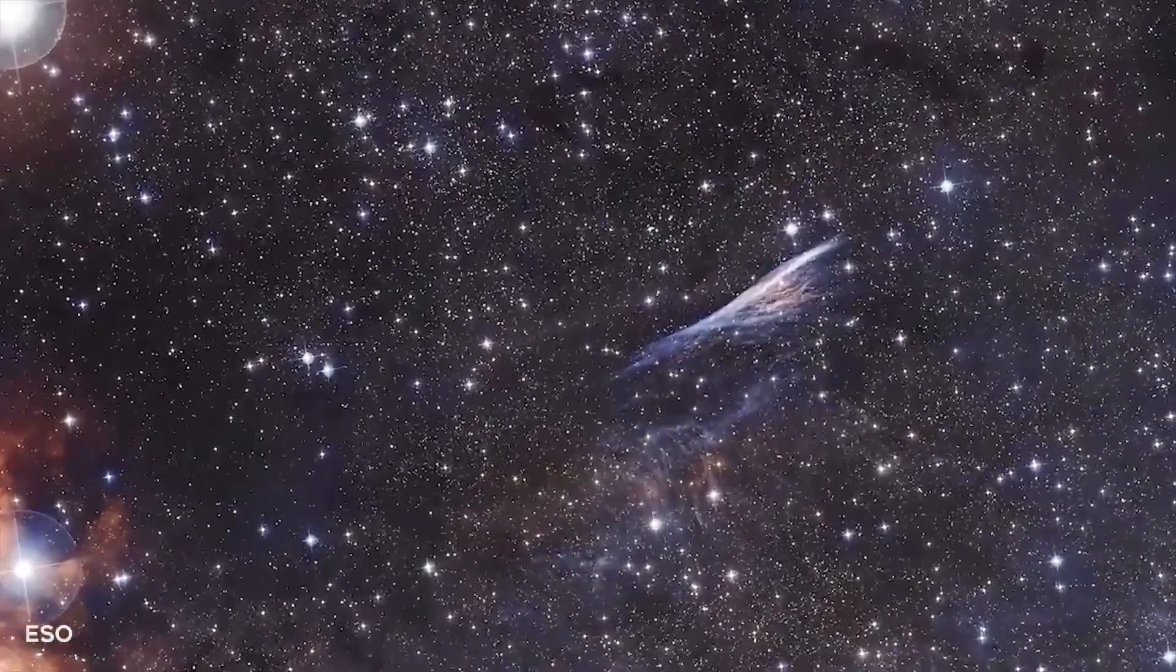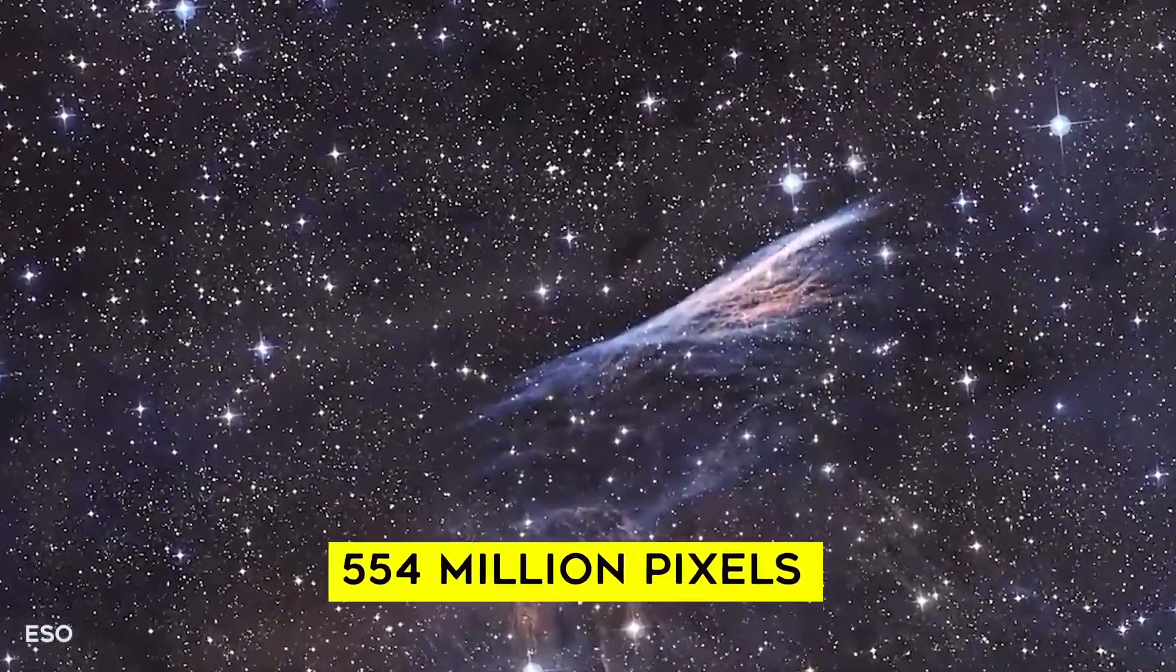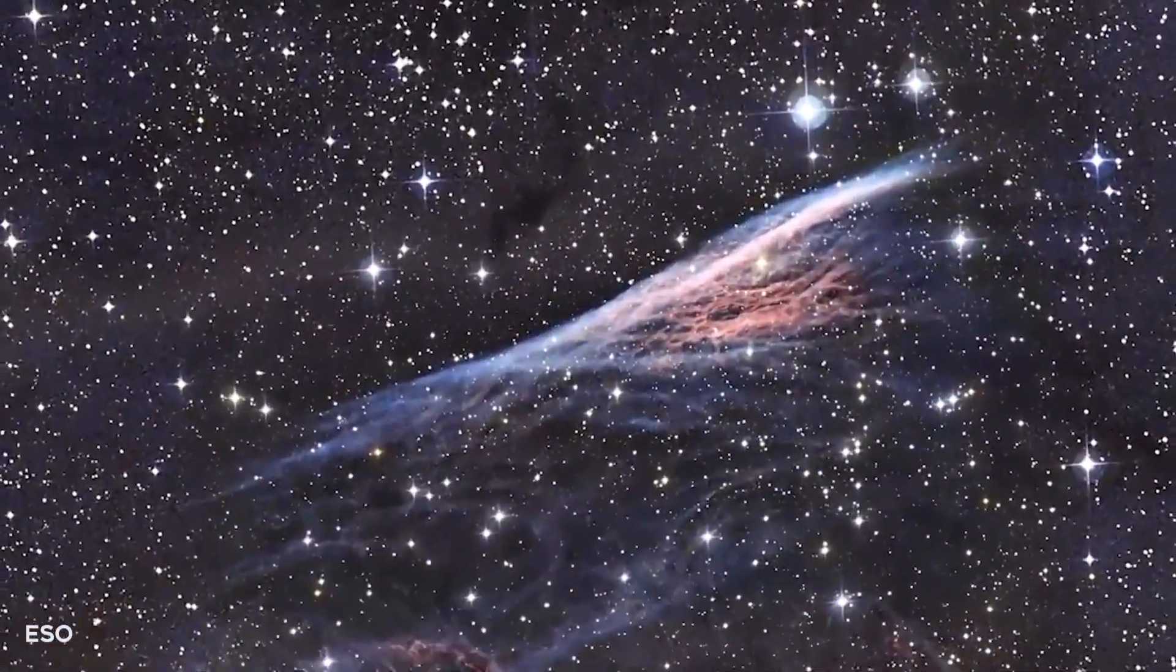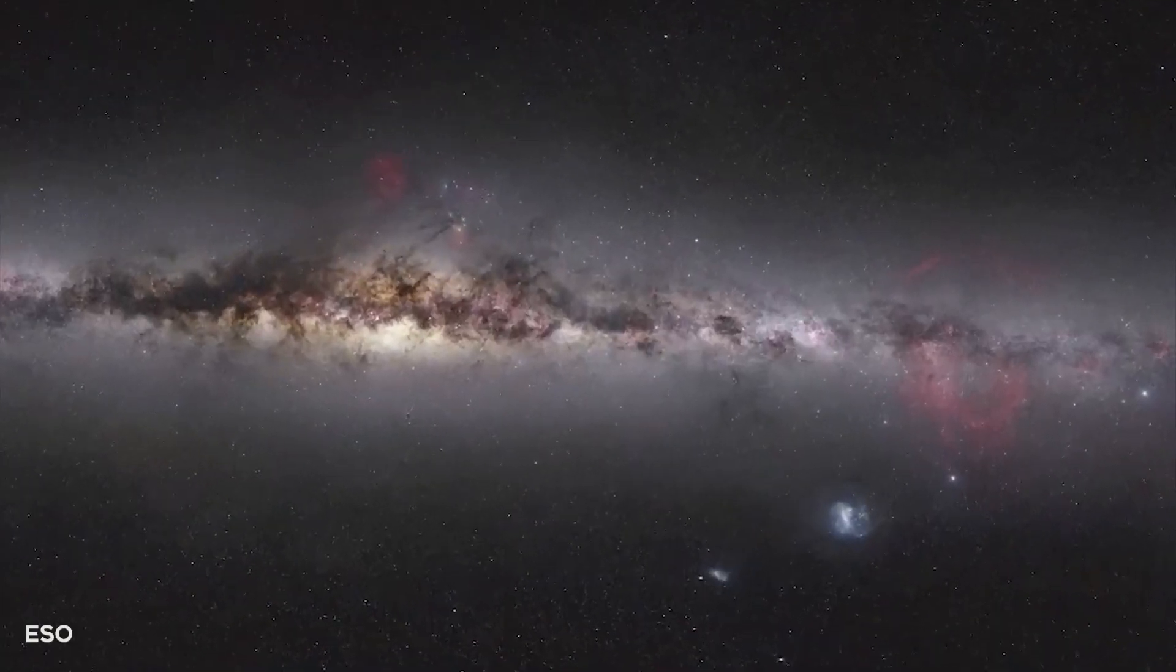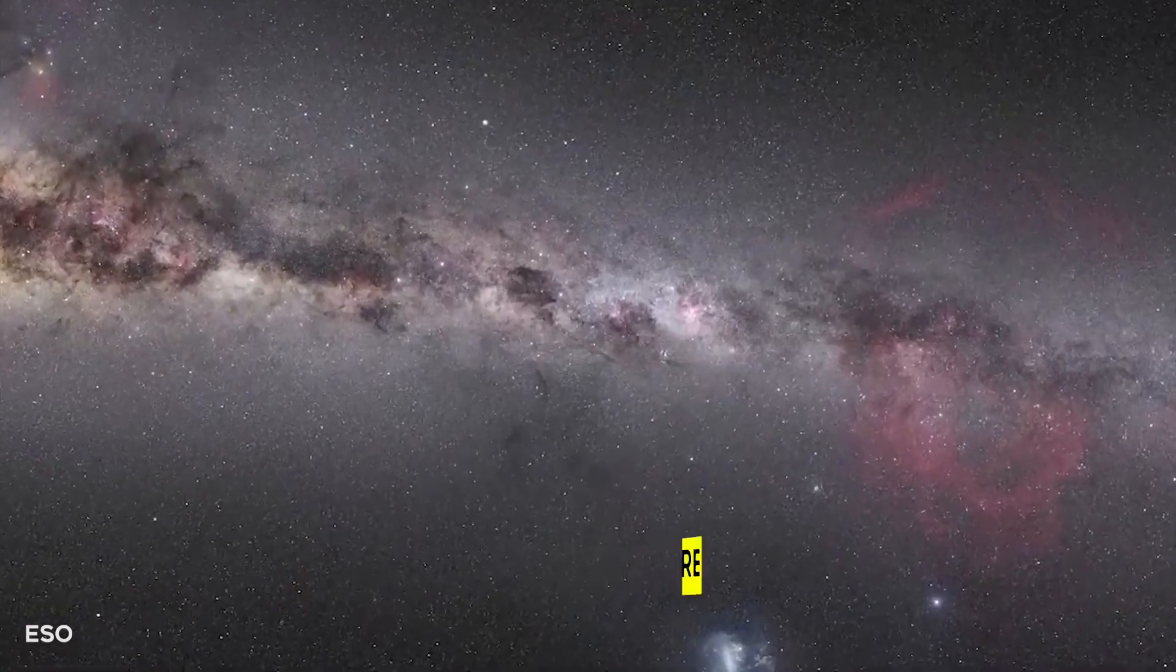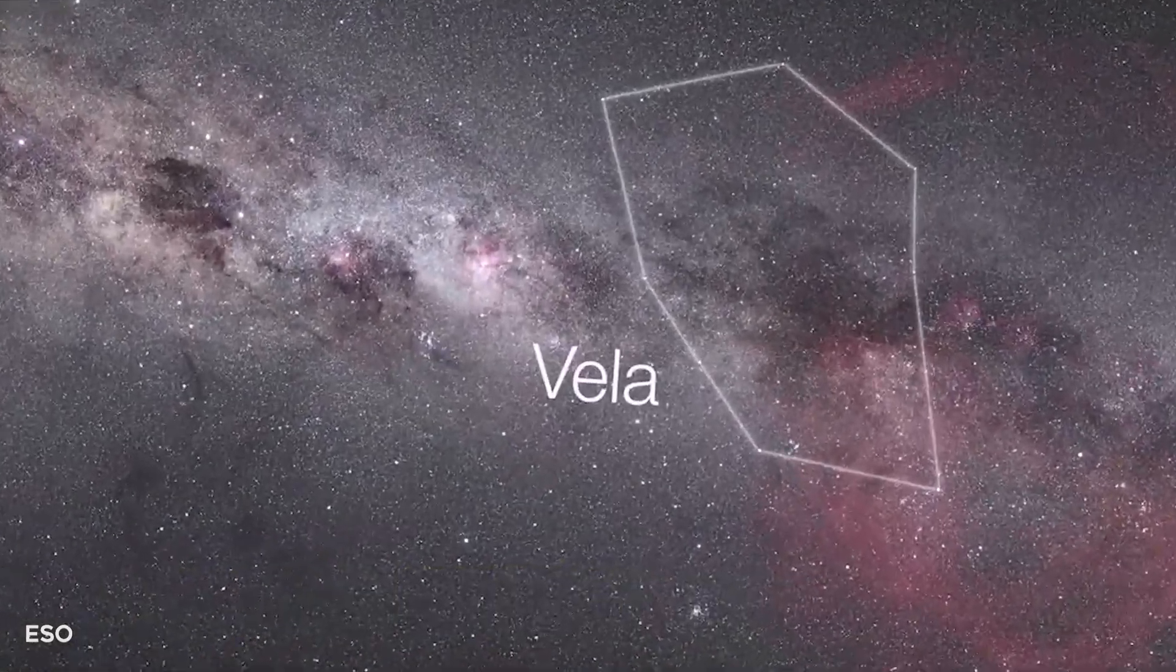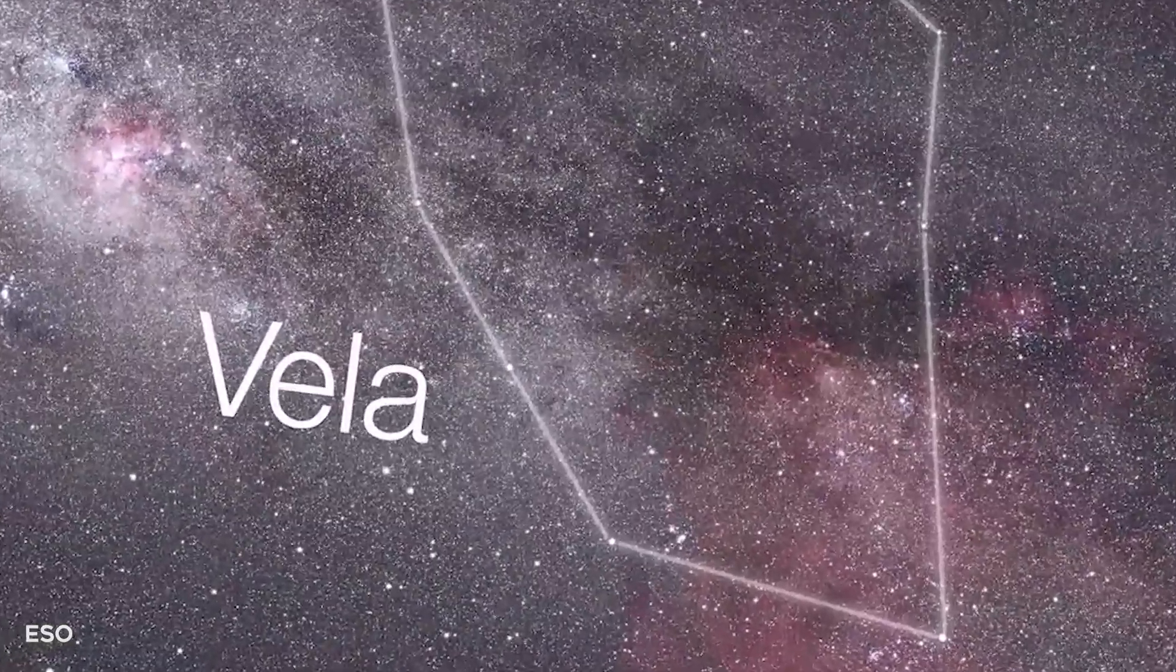This image consists of 554 million pixels. It comes from the VLT Survey Telescope in Chile. At 800 light-years away, the Vela supernova remnant is one of the closest to the solar system.